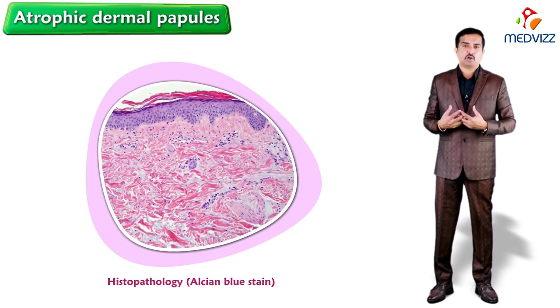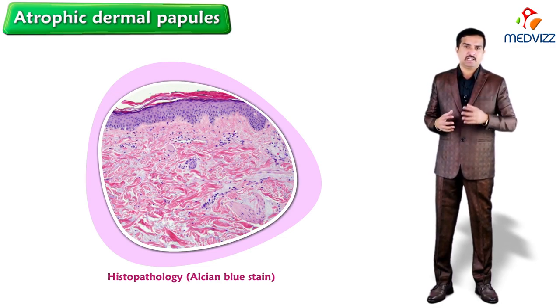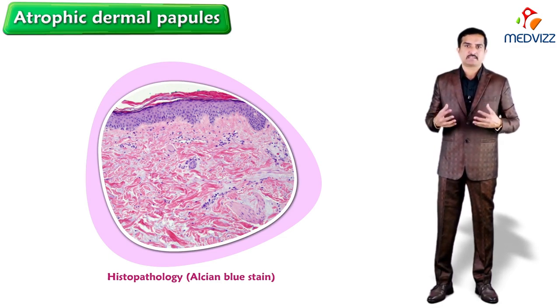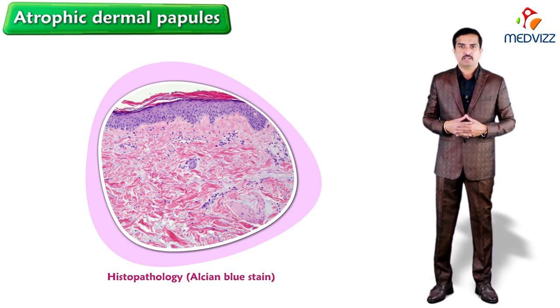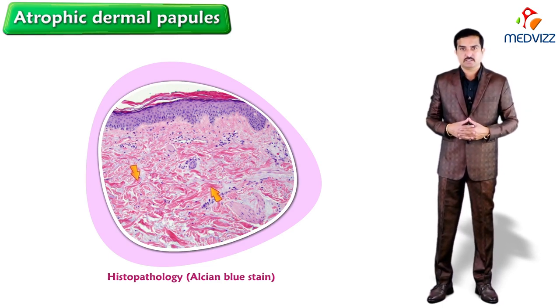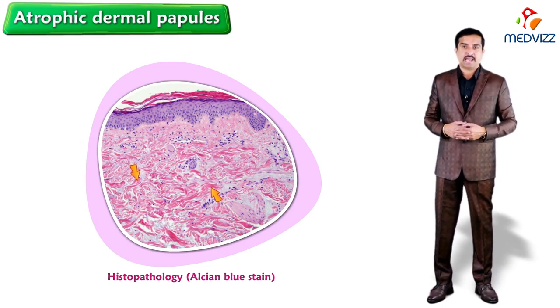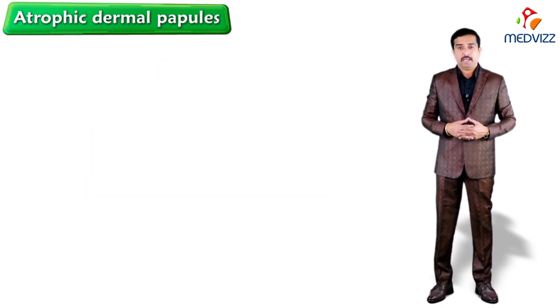If you see the histopathology image, it clearly shows a subtle vacuolar interface change and increased dermal mucin, which is highlighted by Alcian blue stain.